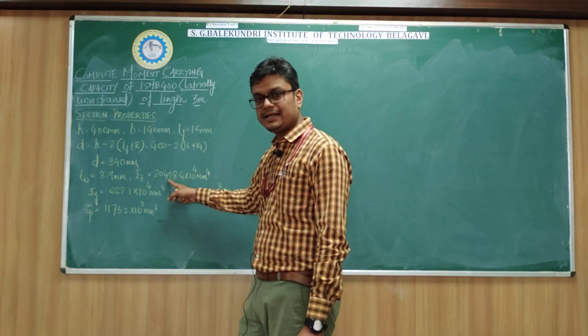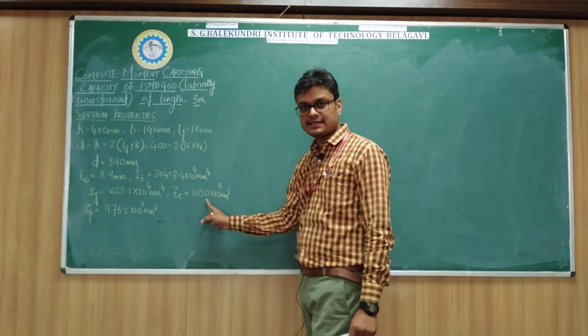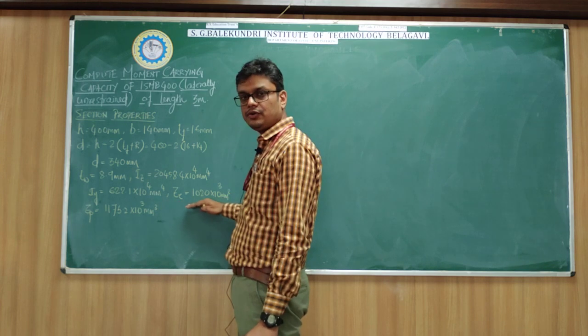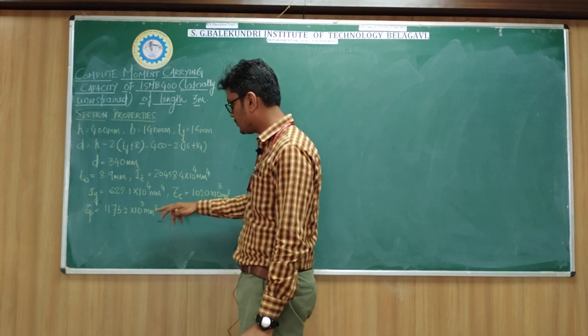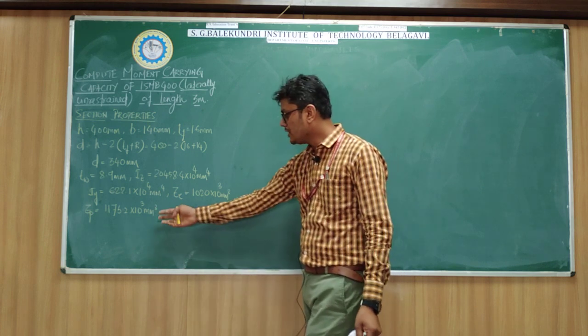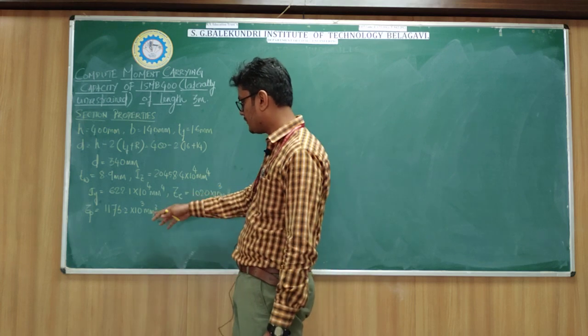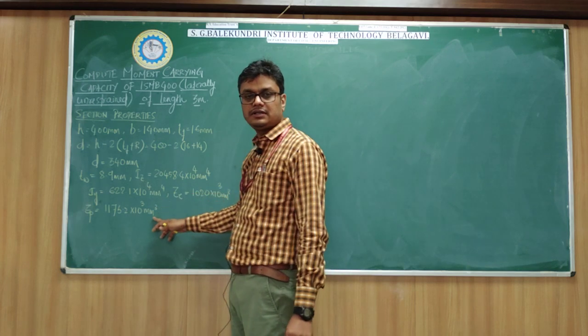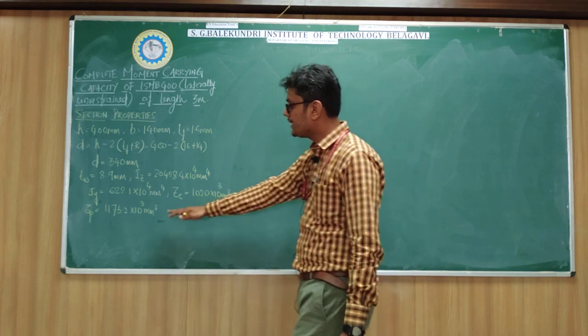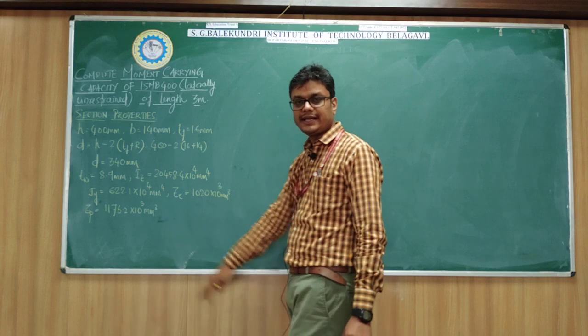Moment of inertia in major axis, moment of inertia in minor axis, elastic section modulus, and plastic section modulus. Most steel tables will give you up to elastic section modulus. Some steel tables will also give plastic section modulus. If you cannot find the plastic section modulus from the steel table you are referring, you can refer to the last pages of IS800-2007 where plastic section moduli for some sections are given.